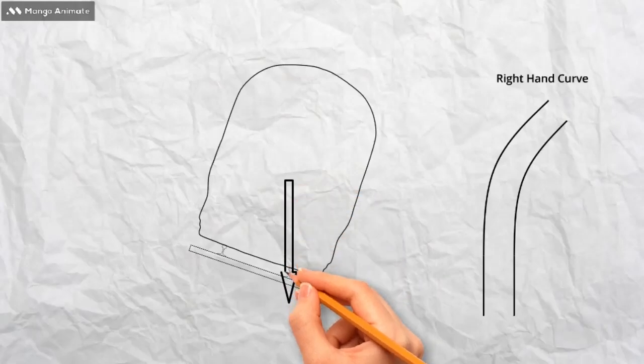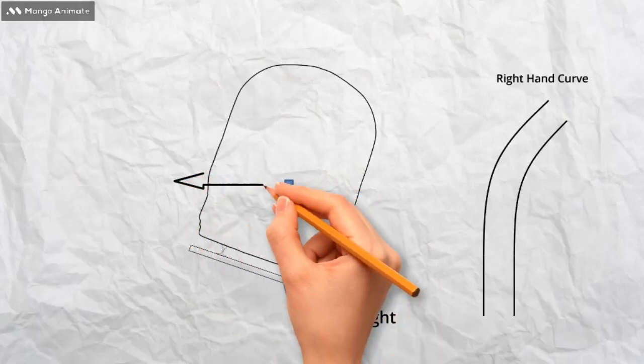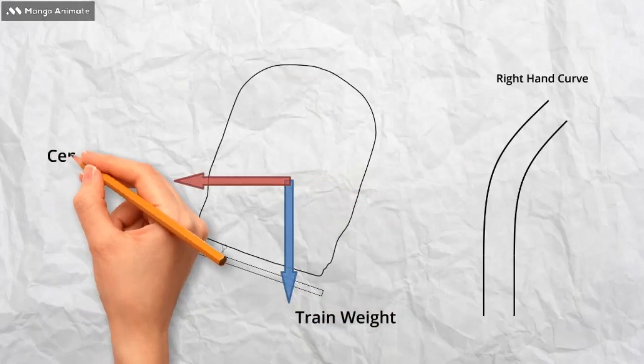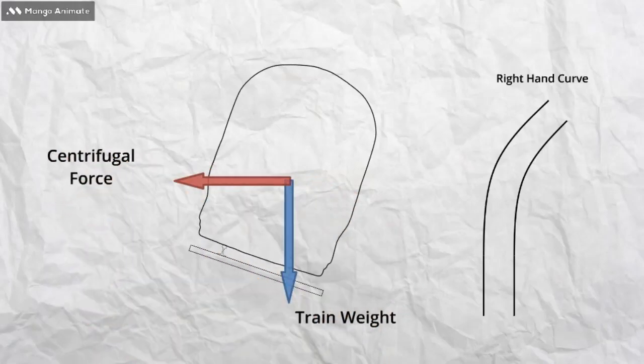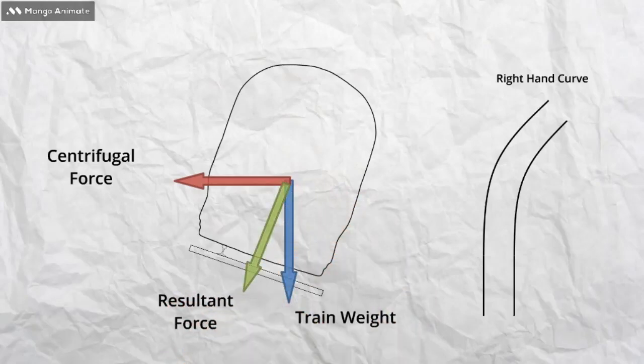Again, the train is on a right-hand curve, with cant applied. It is experiencing the centrifugal force from going around the curve, and a force from its weight. You can see the resultant force, in green is at exact right angles, perpendicular, to the plane of the rails, shown here by the dotted line. This means the overall force experienced by the train, and anything within it, is down through its floor. This is the same as if the train was on flat straight track.